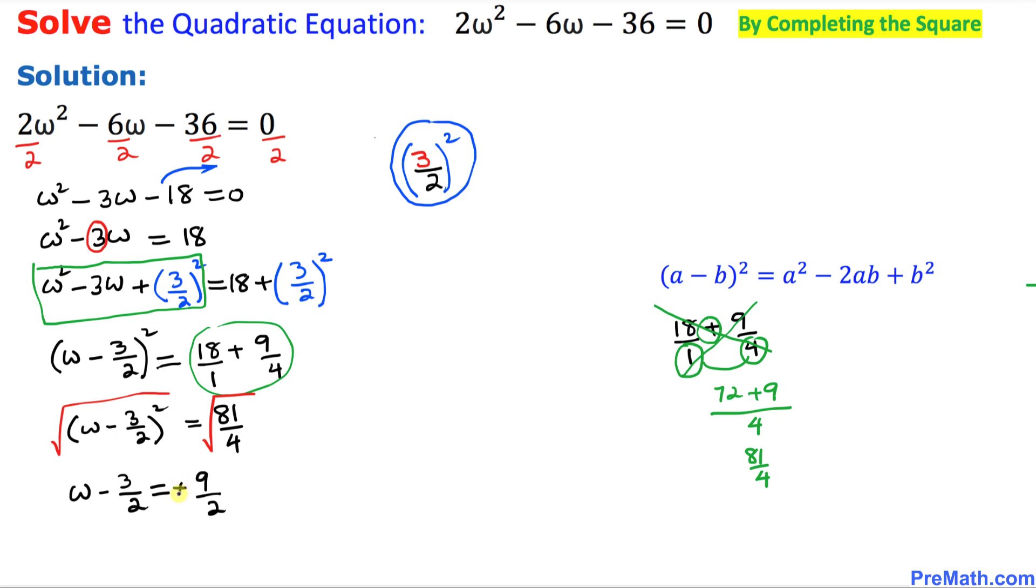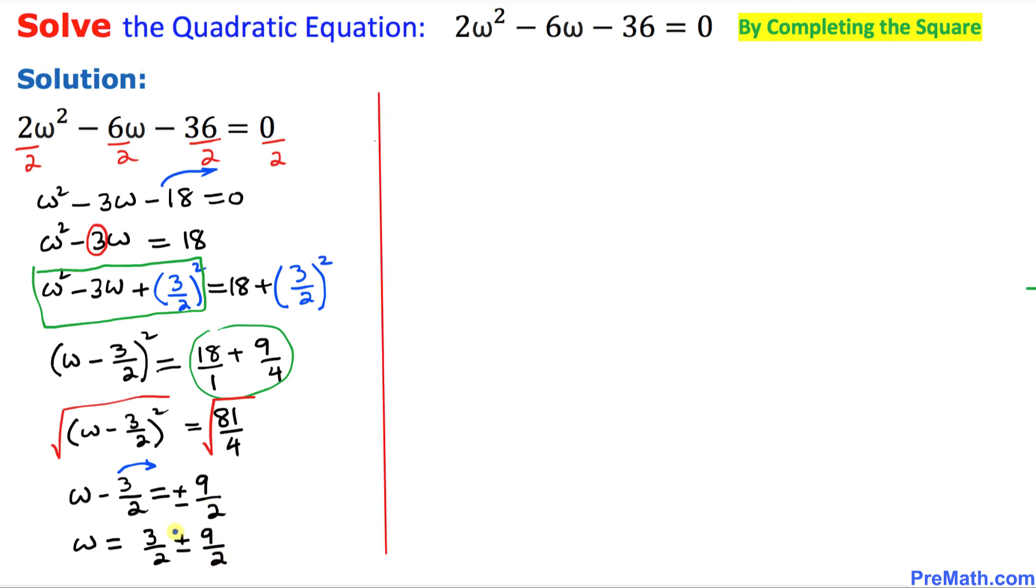Now we are going to move this -3/2 on the right hand side. So we got ω = 3/2 ± 9/2. Now we are going to split these two signs, positive and negative.